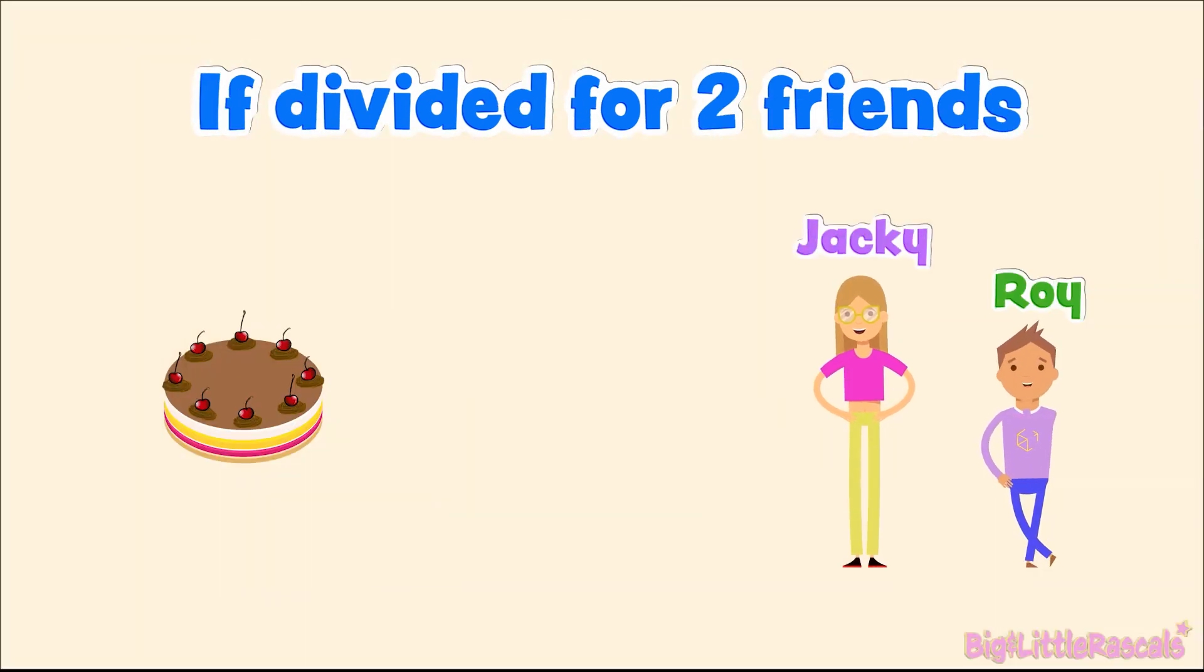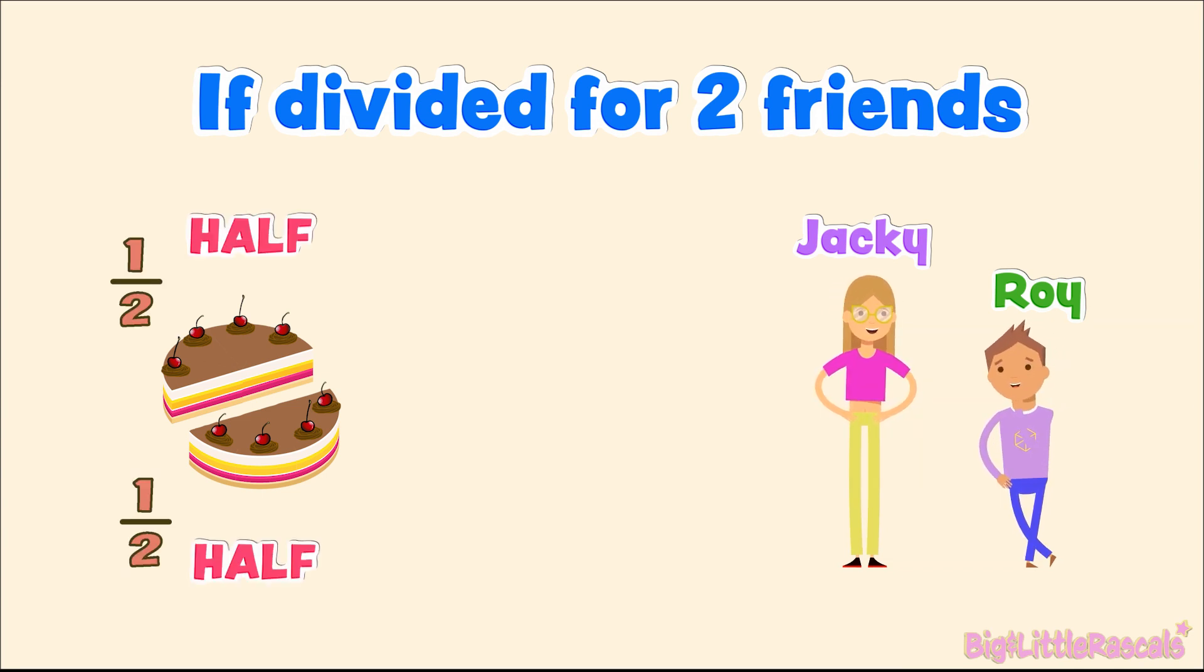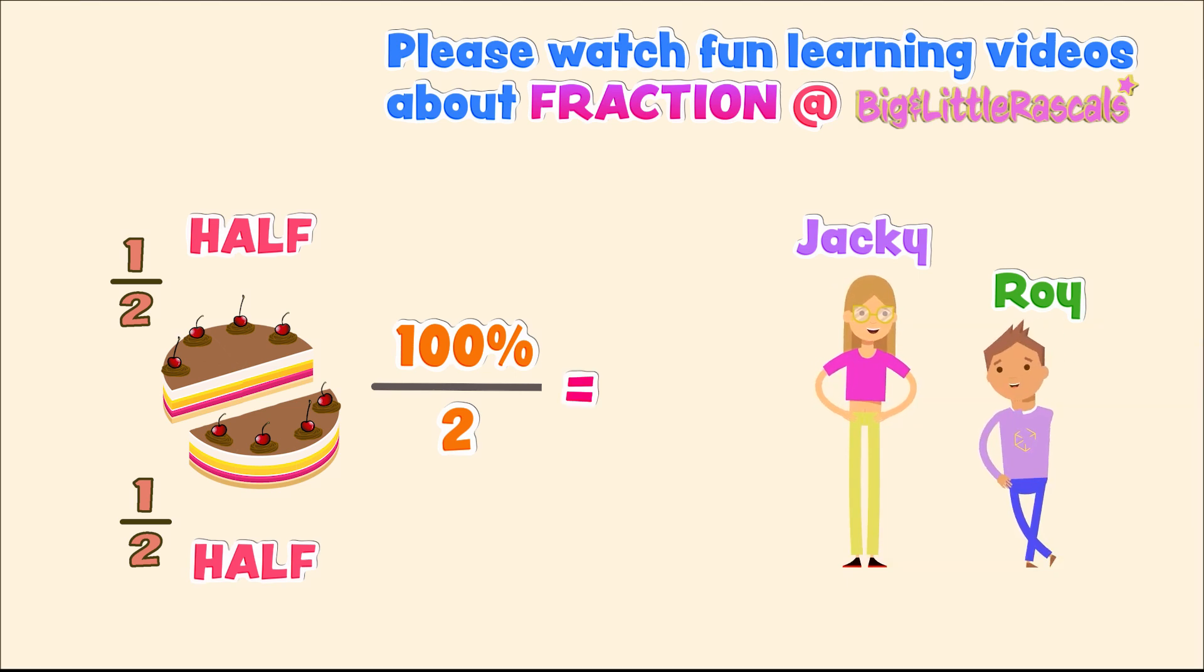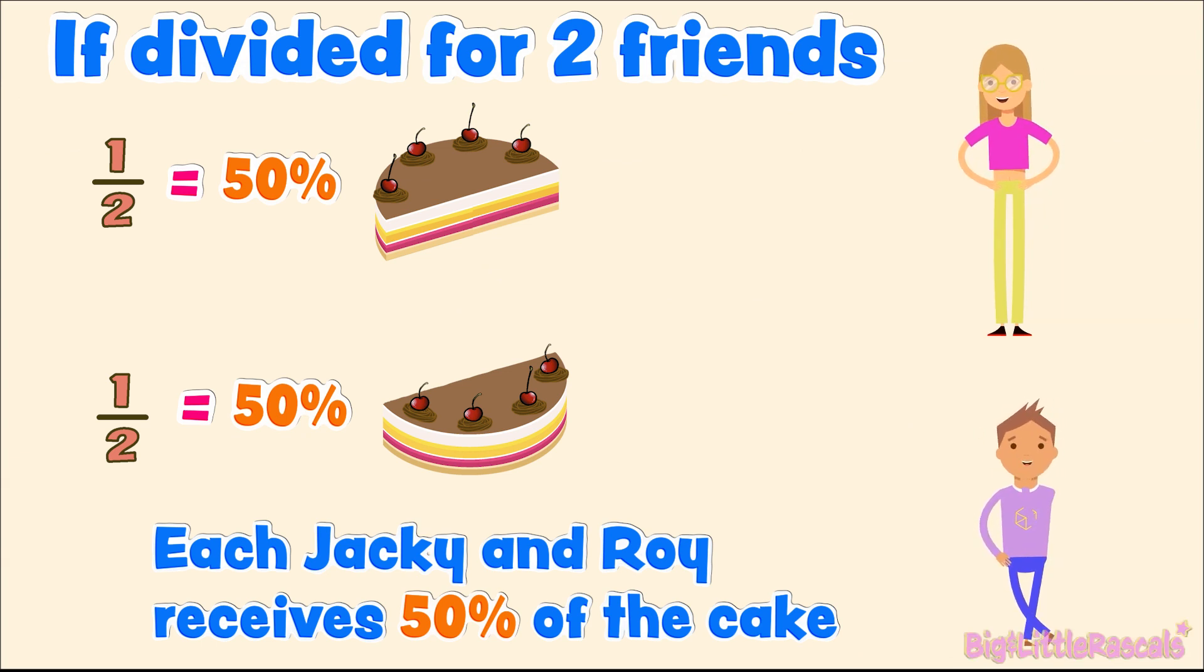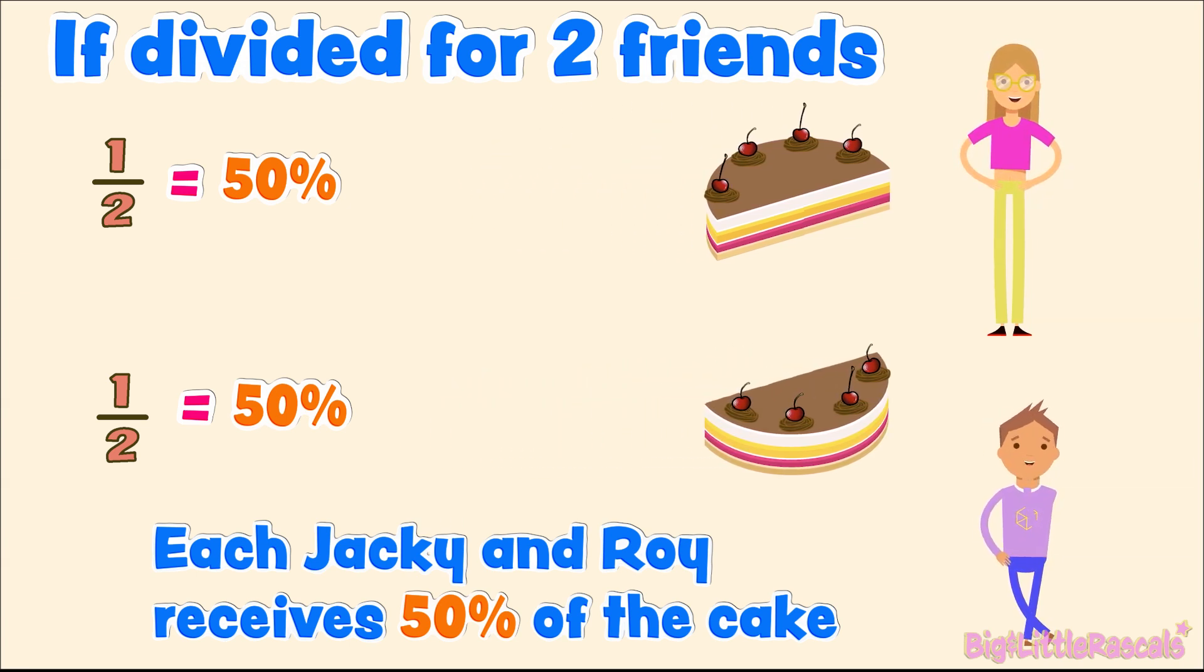But if we want to divide the cake to give to our two friends, Jackie and Roy, then we need to divide this cake into two equally. So, each friend receives half of the cake. If you're not familiar with fraction, not to worry. Please watch our fun learning video about fraction only at Big and Little Rascals. But how to say half in percentage? Easy. 100 percent divided by 2 equals to 50 percent. So, half in percentage is 50 percent. Each Jackie and Roy receives 50 percent of the cake. Yum!